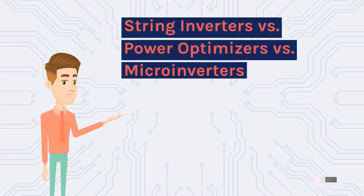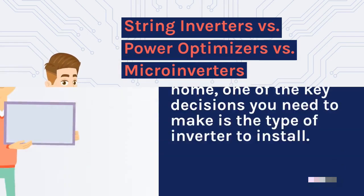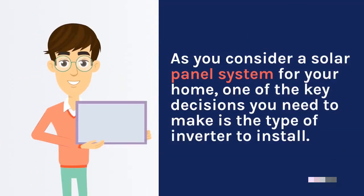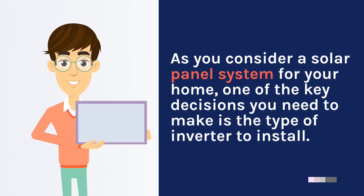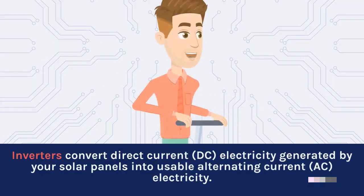String inverters versus power optimizers versus microinverters. As you consider a solar panel system for your home, one of the key decisions you need to make is the type of inverter to install. Inverters convert direct current, DC, electricity generated by your solar panels into usable alternating current, AC, electricity.